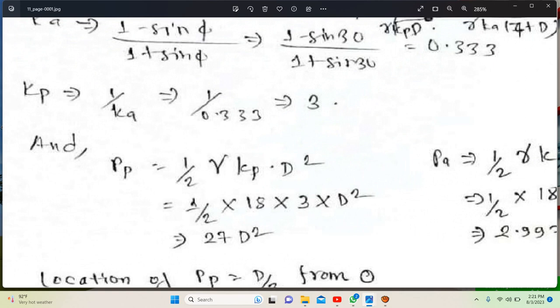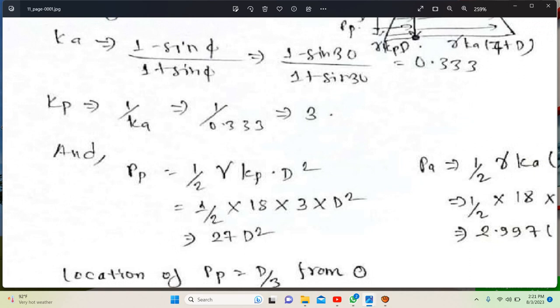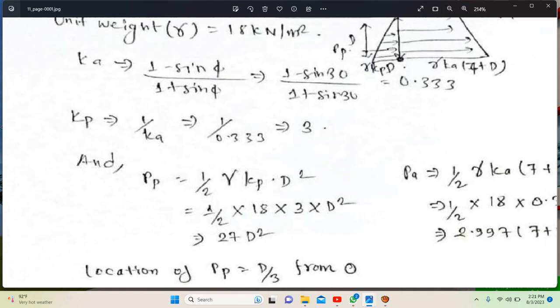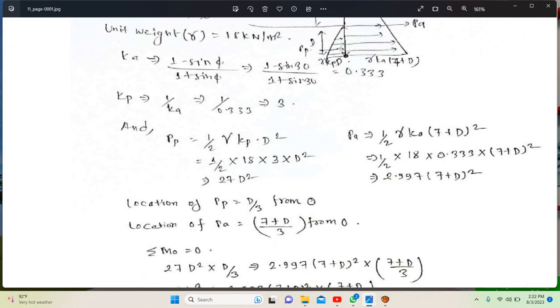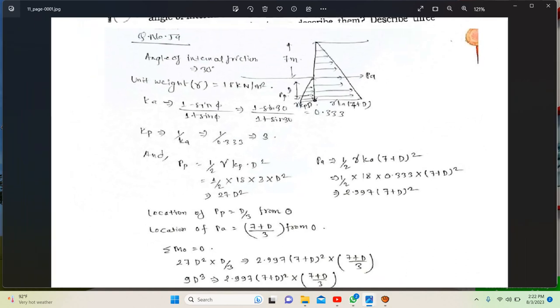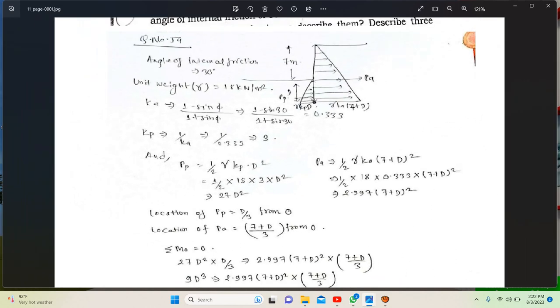K equals 1 minus sine 30 degrees over 1 plus sine 30 degrees, which equals 1 minus sine phi over 1 plus sine phi. Location of PP is d by 3 from zero. Location of PA is 7 plus d from zero.